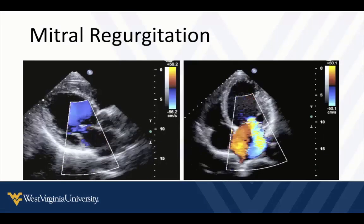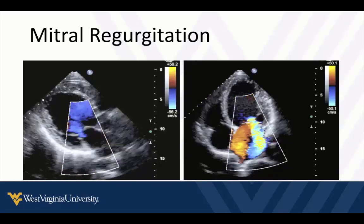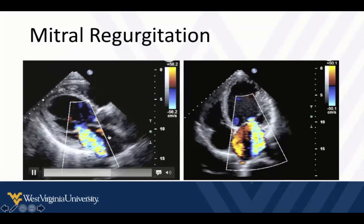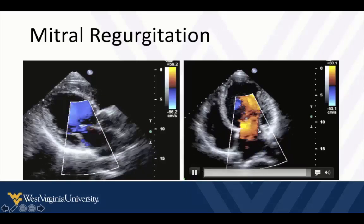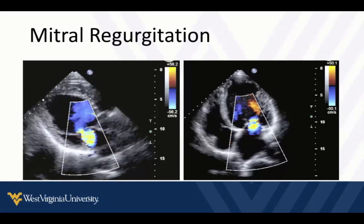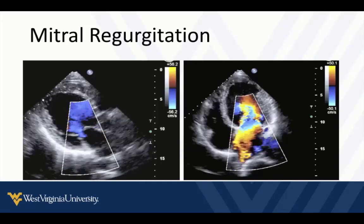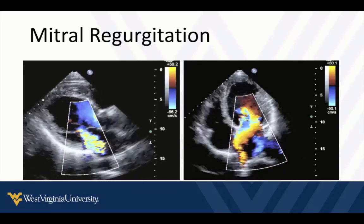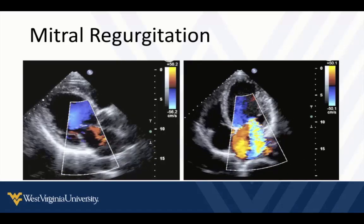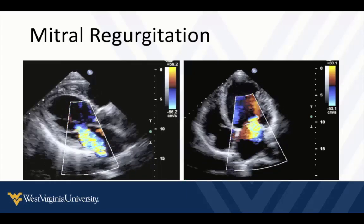As we get practice with our 2D images, we can start practicing with color Doppler. There are scenarios where we want to recognize acute regurgitation. This is an example of mitral regurgitation during systole — a big jet going back to the left atrium. Most of the time these aren't new acute things, but acute regurgitation from papillary rupture or endocarditis might be important. Generally, it's important to get practice with 2D images before moving on to color analysis.